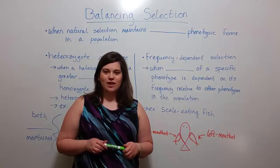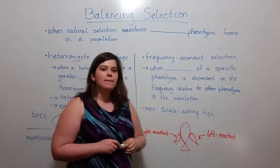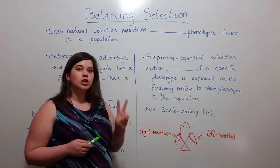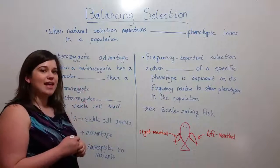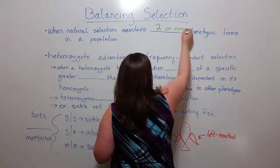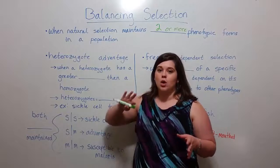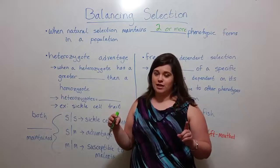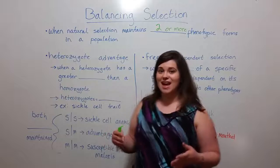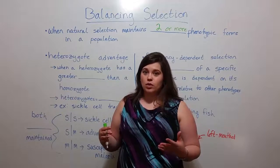Hi everyone and welcome to Biology Professor. Today we're going to talk about balancing selection. Balancing selection is an interesting phenomenon when natural selection maintains two or more phenotypic forms in a population — rather than natural selection favoring one phenotype over another and over time that one phenotypic form becoming far more common or perhaps the only phenotypic form in the population. Instead, two or more are maintained at relatively stable frequencies.